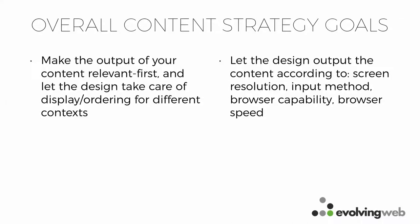For really high-level goals with content strategy, we want to make sure important content comes first. This was also discussed in the accessibility session — making sure content is really semantic and letting the design just take care of the display. We want to let the design change the content presentation according to screen resolution and browser capability or speed, but not bake those assumptions into how the content is structured. Basically, separating out your design from the logical presentation of the content.